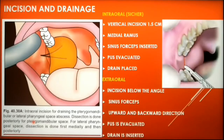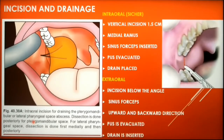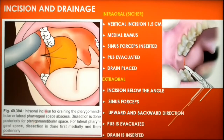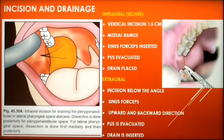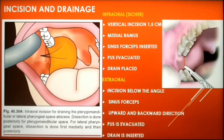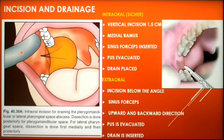Surgical access to the various compartments of the masticator space is complicated by the containment of the infectious process within the muscle masses. A suggested intraoral approach to the pterygomandibular space involves placing a vertical incision along the pterygomandibular raphe on the medial aspect of the ramus. A sinus forceps is then inserted into the abscess cavity and opened and closed, then withdrawn. The pus is evacuated, a rubber drain is introduced, and secured in position with a suture.